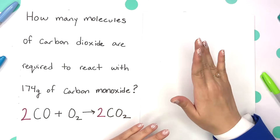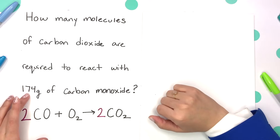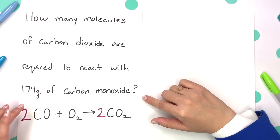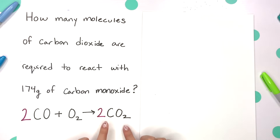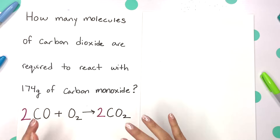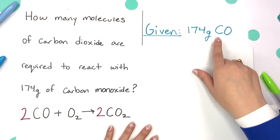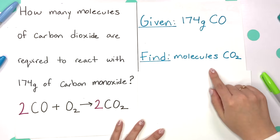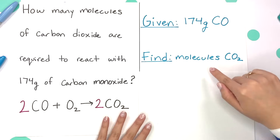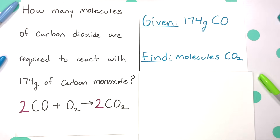Our next example: how many molecules of carbon dioxide are required to react with 174 grams of carbon monoxide? Remember, carbon dioxide — di meaning two — is CO2. Carbon monoxide — mono meaning one — is CO. So we're given 174 grams of carbon monoxide, and we are finding molecules of CO2. Key word: molecules. Anytime you see the word molecules, you use Avogadro's number.